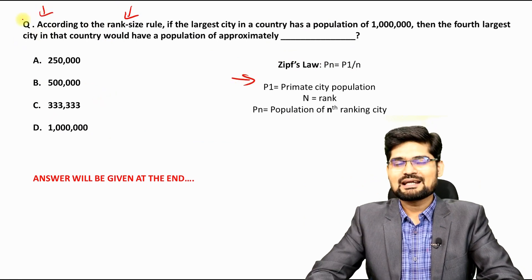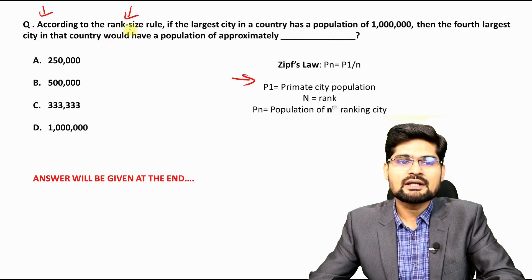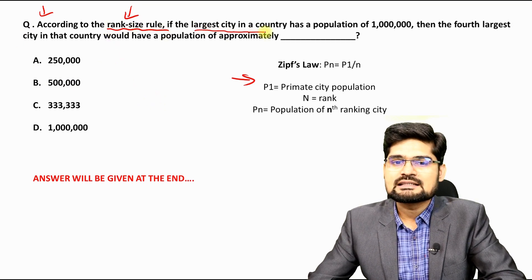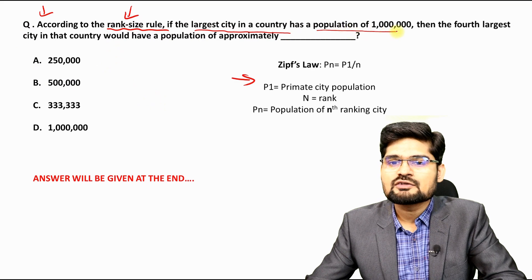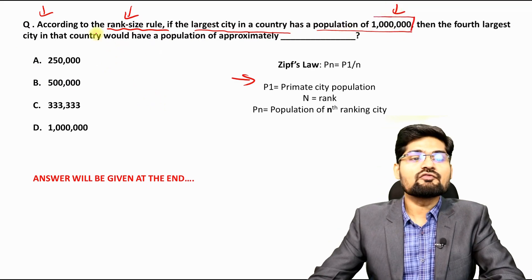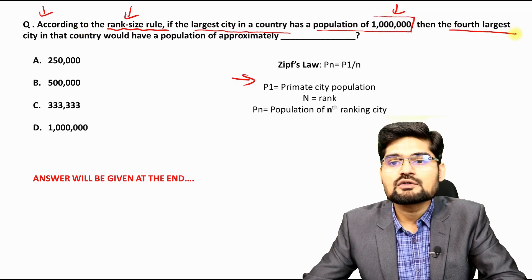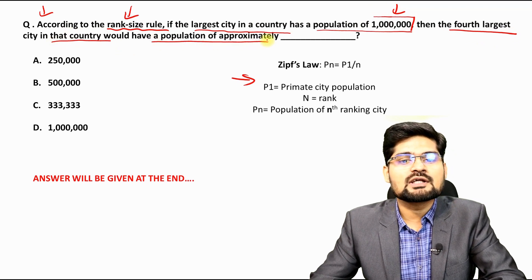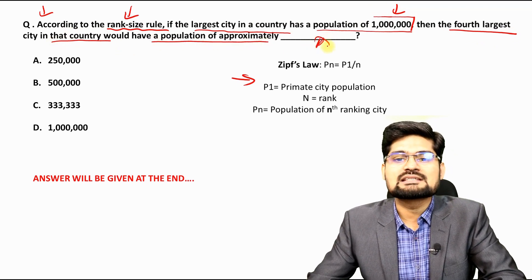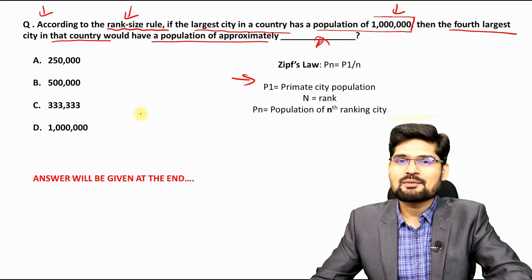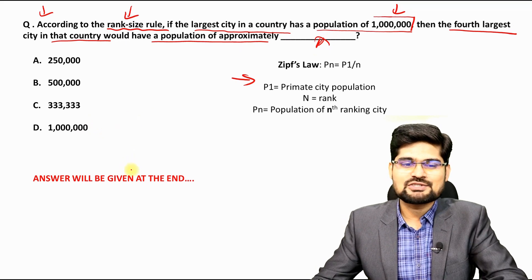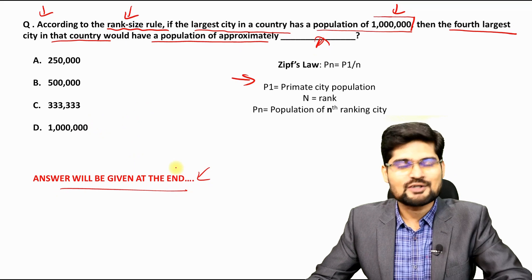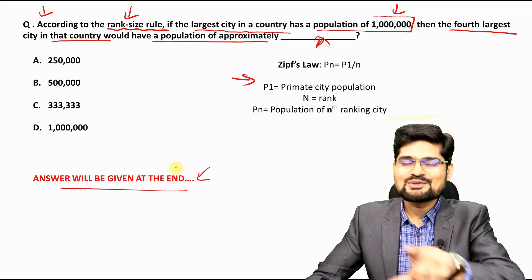Now here is a question to test your understanding using this formula. According to the rank size rule, if the largest city in a country has a population of 1 million, then the 4th largest city in that country would have a population of approximately how much? Keep watching for the answer and do reply in the comment box.